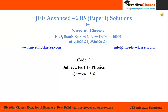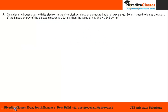Let us discuss question number 5 and 6 of code 9 of JEE Advanced 2015 paper 1. In question number 5, we have to calculate the orbital of the electron in which it is residing. We have given some energy to this electron and it gets ejected with the kinetic energy of 10.4 eV.